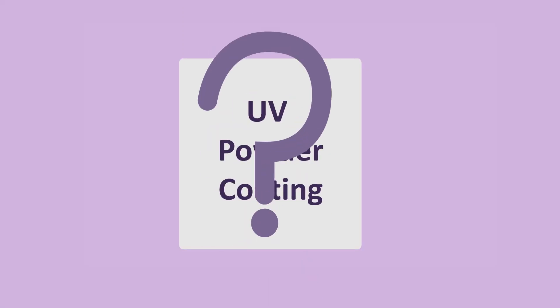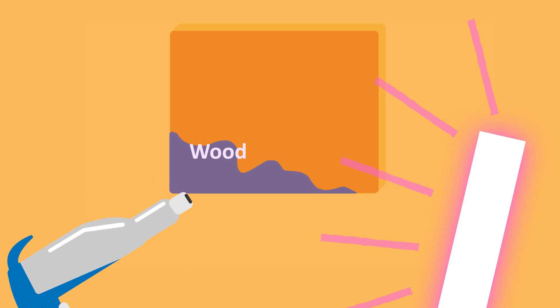What is UV powder coating? UV powder coating is a type of finishing process used to coat wood, plastic, composite, metal, and other materials.